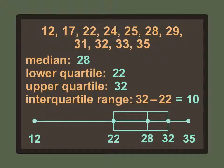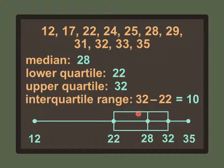Now we can draw the box and whisker diagram. The smallest number is 12 and the highest is 35. Our median is 28, which is closer to 35 than 12, so we place it accordingly — not right in the middle. The lower quartile is 22, and the upper quartile is 32, which is close to 35. We draw the box between the lower and upper quartiles and put a hash mark at the median.